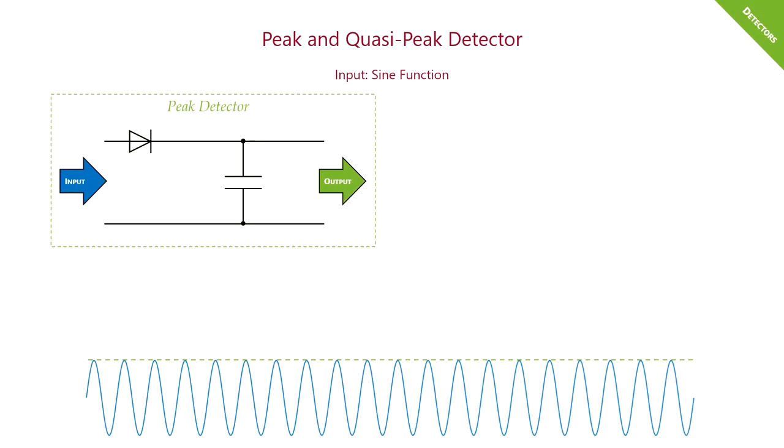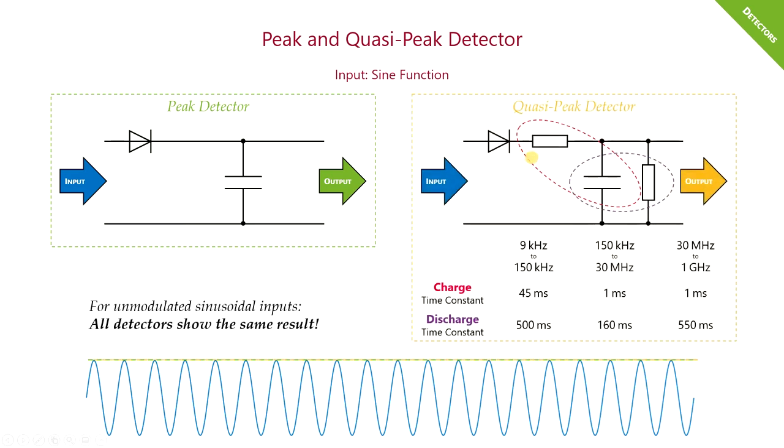The simplest detector is an envelope detector, represented here as our peak detector. We need a diode to rectify our incoming intermediate signal and a capacitor where we can store the peak excursion from the signal.